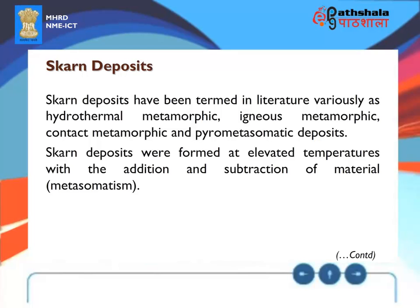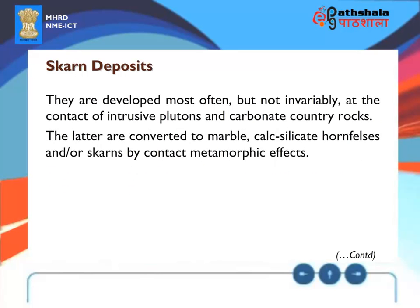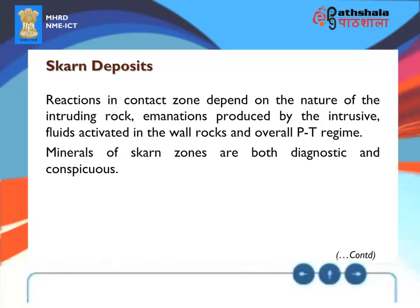Skarn deposits have been termed in the literature variously as hydrothermal metamorphic, igneous metamorphic, contact metamorphic, and pyrometasomatic deposits. Skarn deposits were formed at elevated temperatures with the addition and subtraction of material — metasomatism. They are developed most often, but not invariably, at the contact of intrusive plutons and carbonate country rocks. The latter are converted to marble, cal-silicate hornfels, and/or skarn by contact metamorphic effects.